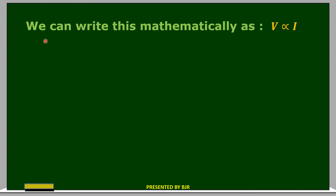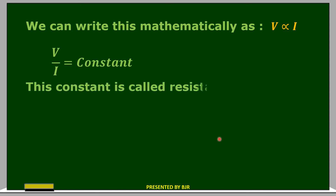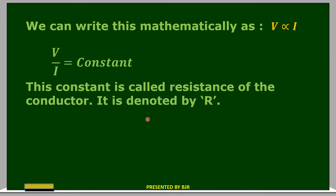Mathematically, V is proportional to I — when I increases, V also increases; when I decreases, V also decreases. That means V by I is constant. This constant is called the resistance of the conductor, denoted by R. So V is directly proportional to I, and the ratio V by I is always constant for a particular conductor at constant temperature.